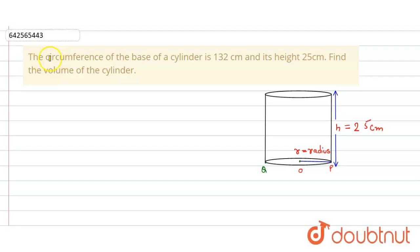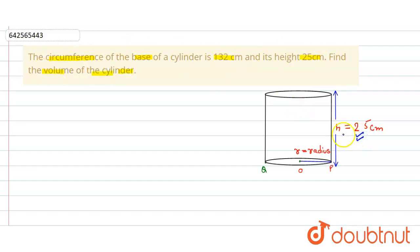In the given question, the circumference of the base of a cylinder is 132 centimeters and its height is 25 centimeters. We have to find the volume of the cylinder. Here, this is the height of the cylinder and the circumference is given to be 132 centimeters.